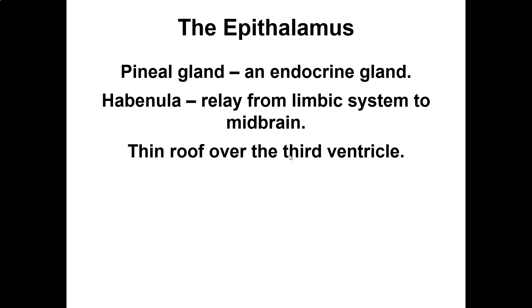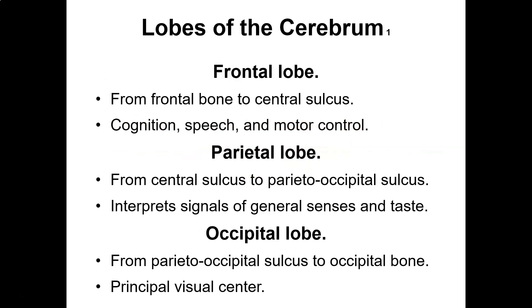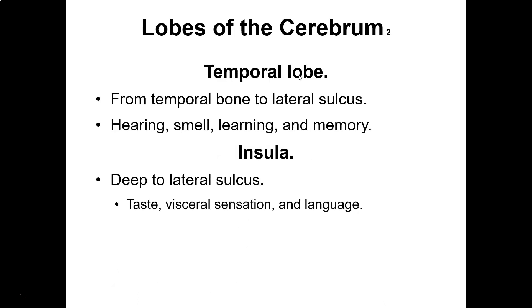The epithalamus includes the pineal gland and the habenula, which relays from the limbic system to the midbrain. The cerebrum allows you to turn pages, read and comprehend words, remember ideas, talk, and take exams. The lobes of the cerebrum: the frontal lobe handles cognition, speech, and motor control. Parietal lobe damage affects interpretation of general senses and taste. Occipital lobe damage affects your visual center. Temporal lobe damage causes difficulty with hearing, smell, learning, and memory. Damage to the insula affects taste, visceral sensation, and language.